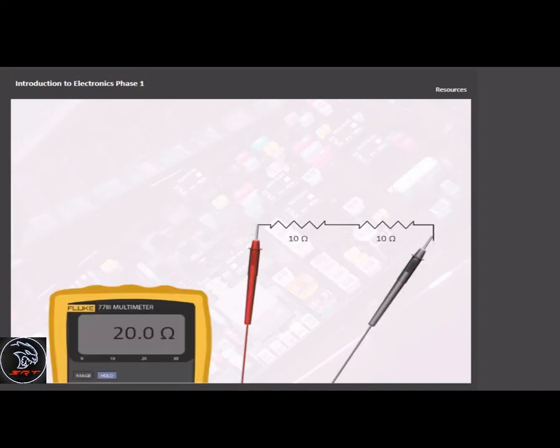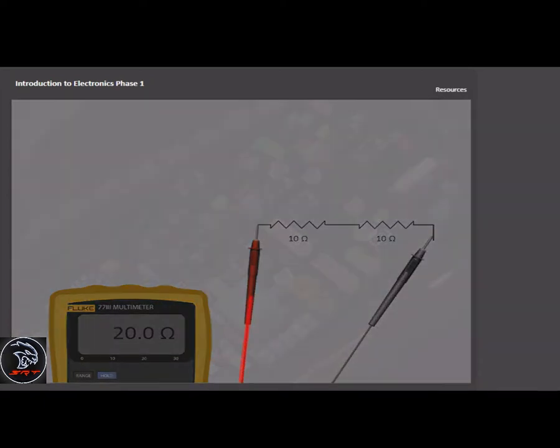The current produced by the DMM flows through one path that passes through all the resistors. So total circuit resistance is equal to the total of all of the resistors added together.